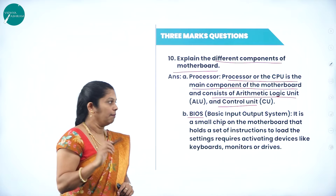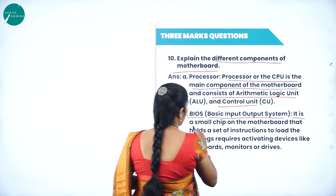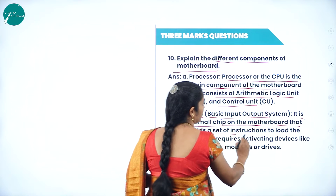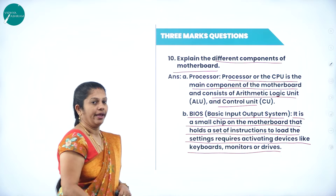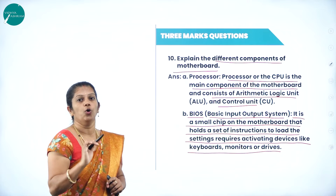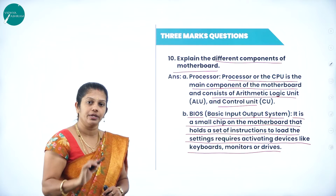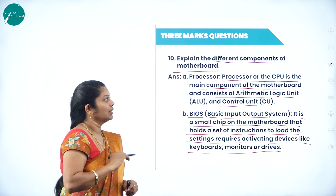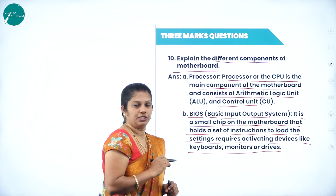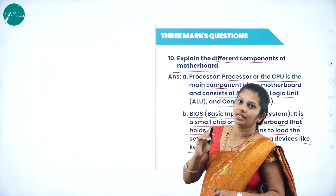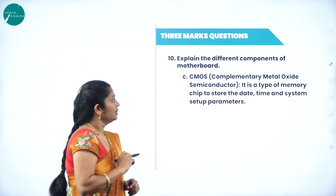The next component is BIOS. BIOS stands for Basic Input Output System. It is a small chip on the motherboard that holds a set of instructions to load the settings required to activate devices like keyboard and monitor. It controls all input as well as output devices. The processor also contains a register, which is a temporary storage unit that stores intermediate data.